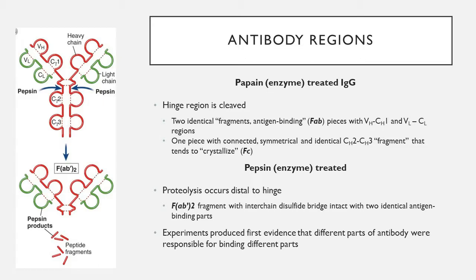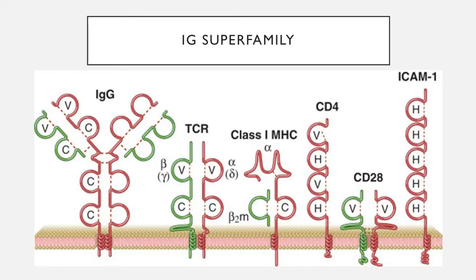The generic Ig domain shape is actually found commonly in many other receptors — what we call the Ig superfamily. This includes the membrane-bound version of IgG, the T-cell receptor, MHC class I, CD4, CD28, and ICAM-1 which binds to lectins as an adhesive molecule. Despite being very different from a B-cell receptor like IgG, we can still see the Ig domains, heavy chains, light chains, variable portions, and constant portions in all of these.